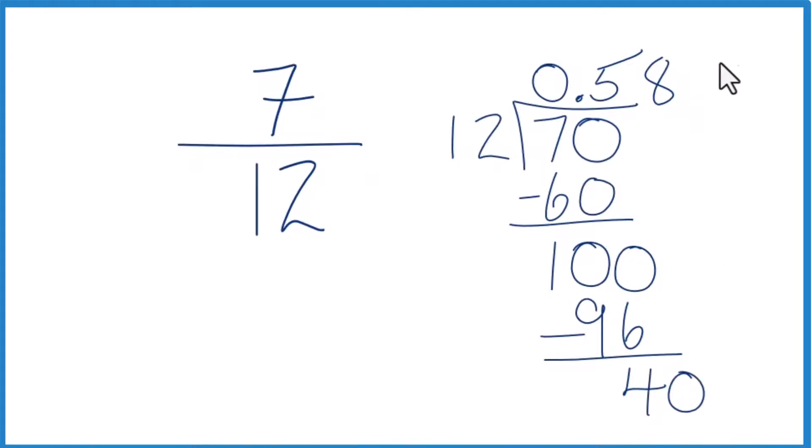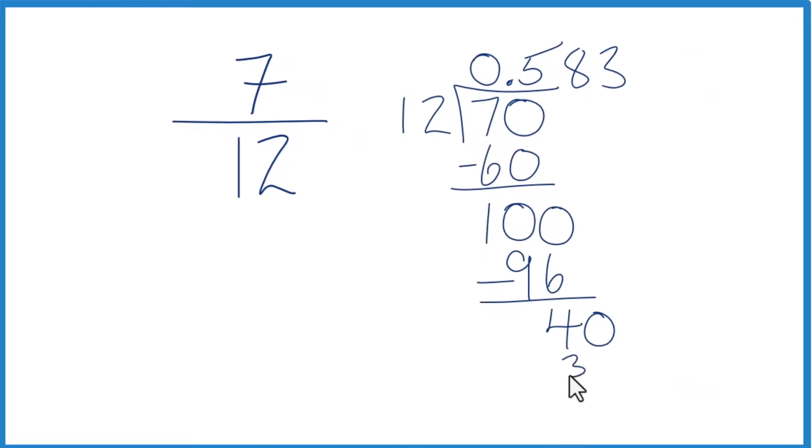Call it 40. Move over 1. Now 3 times 12, that's 36. So we subtract and we get 4.